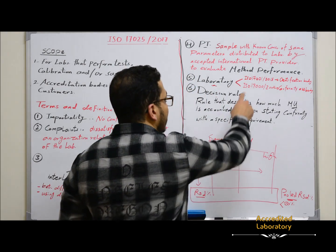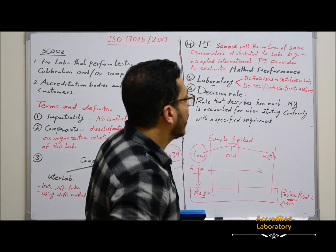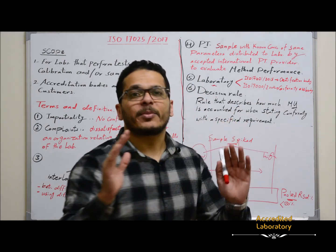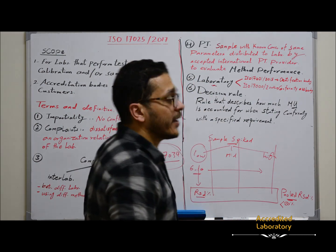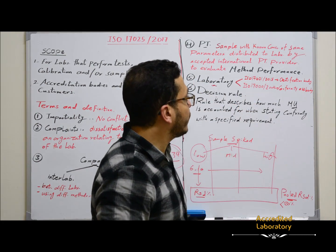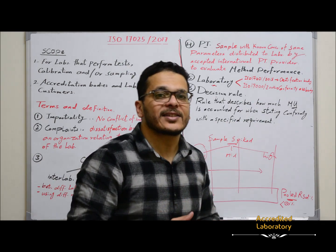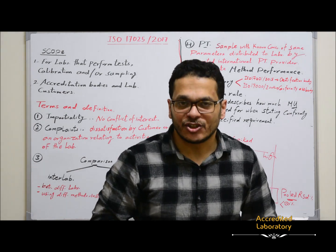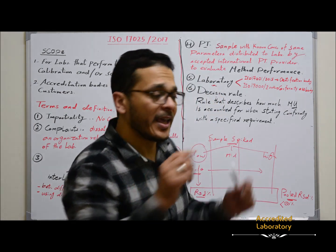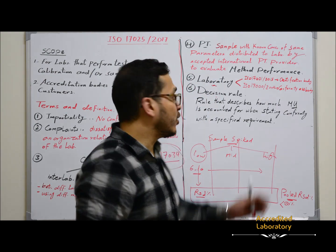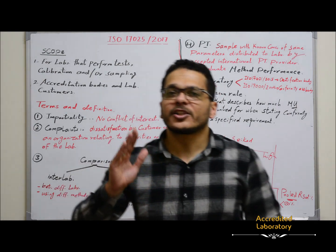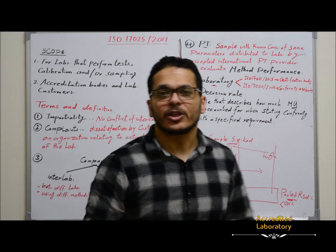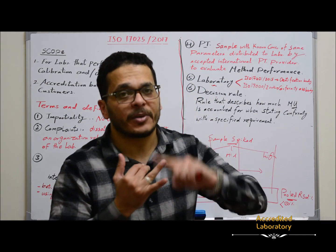In ISO 17021:2015, 'certification body' was replaced by 'laboratory wall,' and in ISO 17021:2004, 'conformity assessment body' was replaced by 'laboratory.' A laboratory is an organization that can perform testing, calibration, and/or sampling. If you are responsible for sampling, you have to apply all requirements of this document to all three activities: testing, calibration, and sampling.